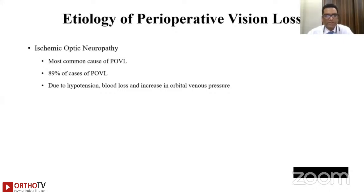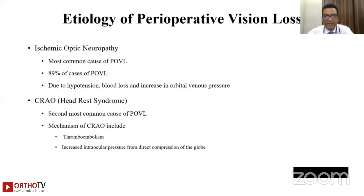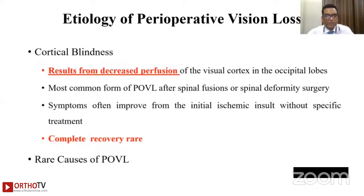Ischemic optic neuropathy is mainly due to hypotension, blood loss, and increased orbital venous pressure. Central retinal artery occlusion — also called head rest syndrome — is the second most common cause, with thromboembolism and increased intraocular pressure from direct globe compression as the mechanism. Cortical blindness results from decreased perfusion of the visual cortex in the occipital lobes and is the most common form after spinal fusion and deformity surgery. Symptoms often improve from the initial ischemic insult, but complete recovery is rare.